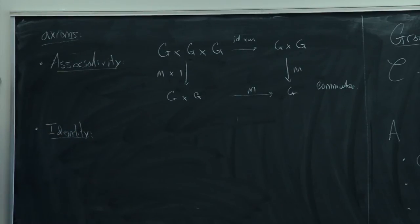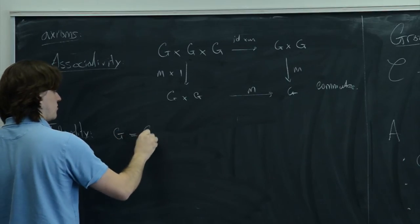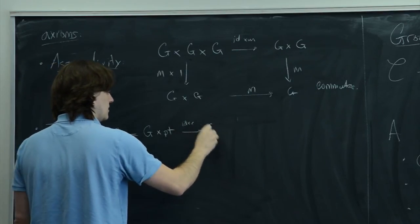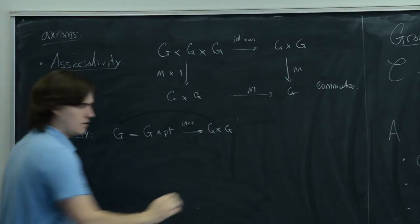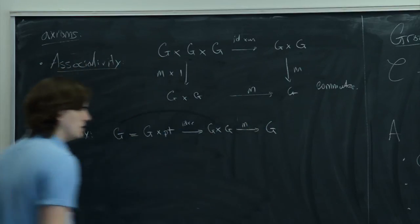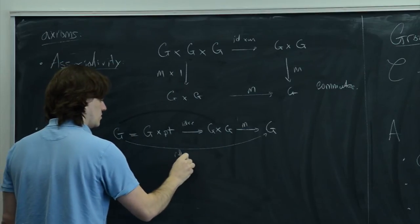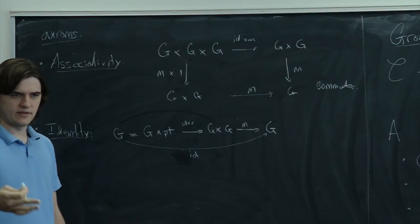There's an axiom saying that the identity element is really the identity element. That means that if you multiply anything in G by the identity section, you should get the same thing back. Categorically, G is naturally isomorphic to the product of G and the final object, and you can map this via the identity map and E to G × G. The composite map — including X into (X, identity element) and then multiplying — should be the identity of G.